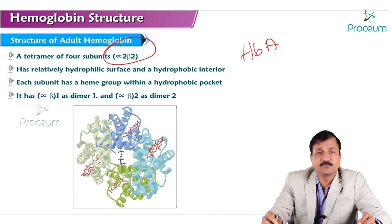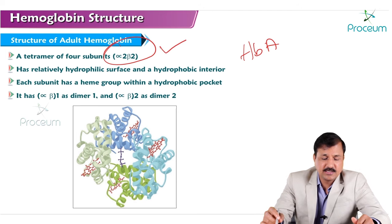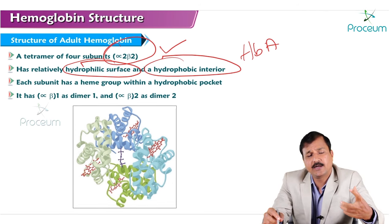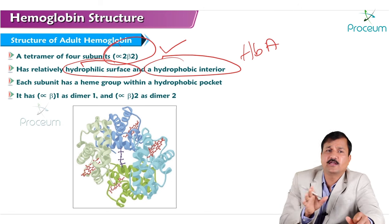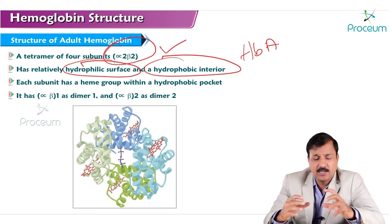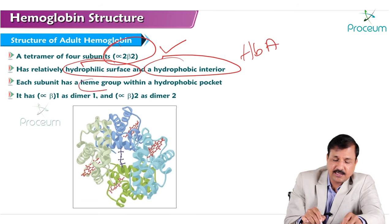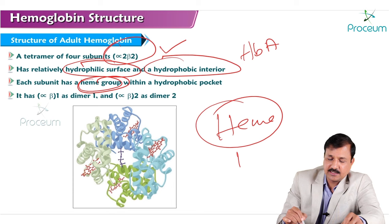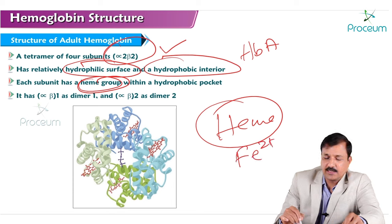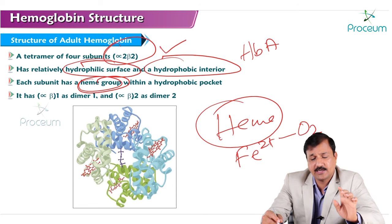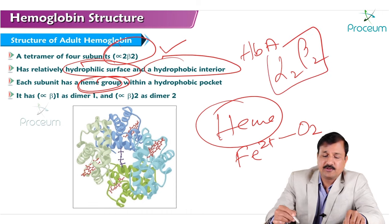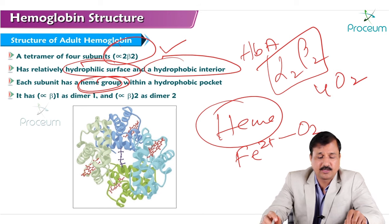Adult hemoglobin HbA has four subunits in an α₂β₂ combination. It has a relatively hydrophilic surface and a hydrophobic interior, as it is globular in shape — globular proteins have hydrophilic amino acids outside and hydrophobic amino acids buried inside. Each subunit has a heme group within a hydrophobic pocket; the heme group contains Fe²⁺, which binds one molecule of oxygen. With four subunits, fully saturated adult hemoglobin binds four molecules of oxygen.